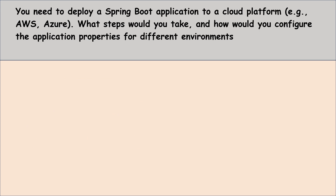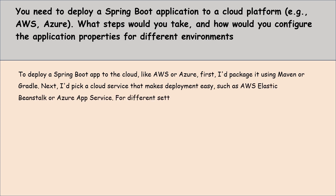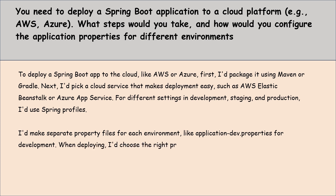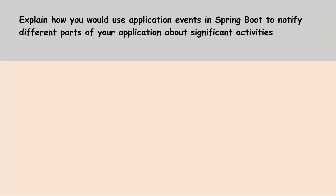Moving to the next question: you need to deploy a Spring Boot application to a cloud platform. What steps would you take and how would you configure the application properties for different environments? To deploy a Spring Boot application to the cloud like AWS or Azure, first I would package it using Maven or Gradle. Next I would pick a cloud service like AWS Elastic Beanstalk or Azure App Service. For different settings in development, staging, and production I would use Spring profiles, creating separate property files for each environment. While deploying I would choose the right profile for that environment.